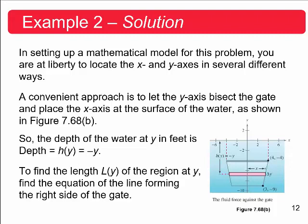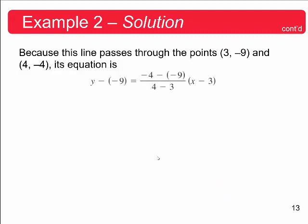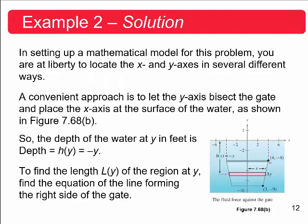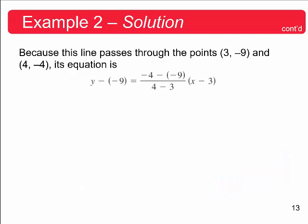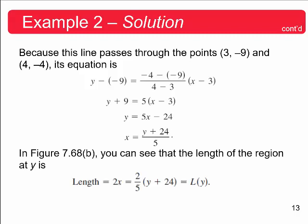Okay, so this is going to be the horizontal length right here. Okay, so to find the length L of y of the region at y, find the equation of the line forming the right side of the gate. Okay, so we're going to find the line here, and then I'll talk about where we go next. So here we're going to find the equation of this line. So, you know, you just take this point here and this point here, and you just, you know, you can find the slope and then go from there and use the point slope formula, okay.